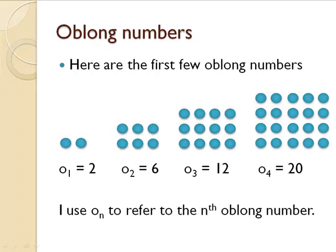Here are the first few oblong numbers: 2, 6, 12, and 20.